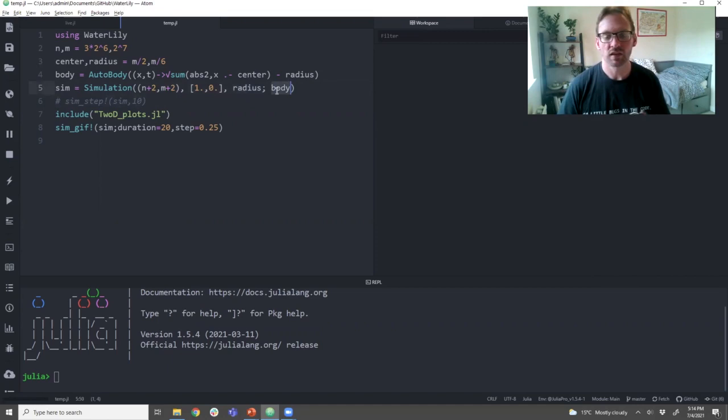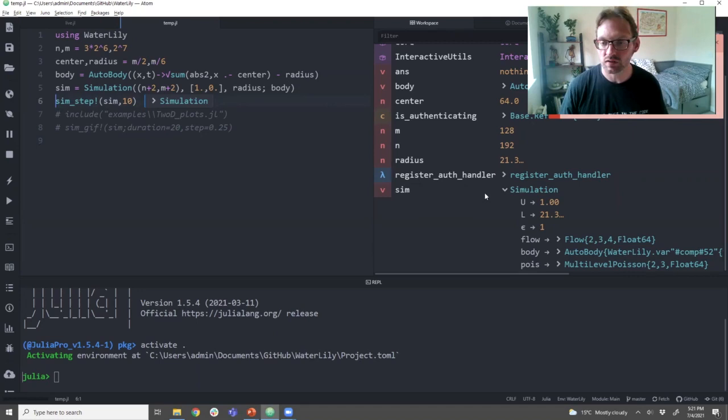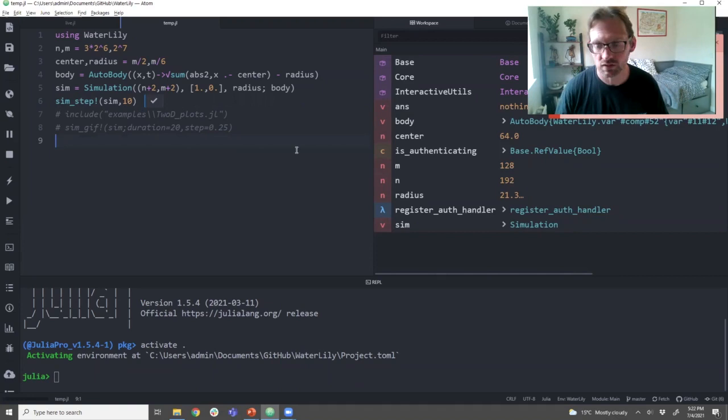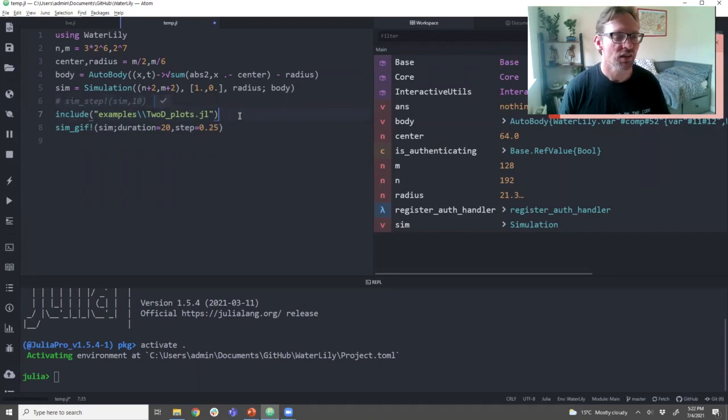So I've run those first five lines. And you can see it's initialized this simulation object. But we need to integrate it forward in time in order to actually see the simulation. So the function for that is simstep. And if I run that, then you can see quite fast. It's run through 10 convective cycles.